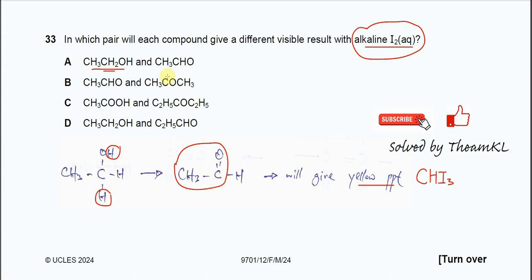And of course ethanal has the methyl ketone group, so it will also give a yellow precipitate. This means ethanol and ethanal both will give the same result. So A is not the answer, because the question is asking for a different visible result.